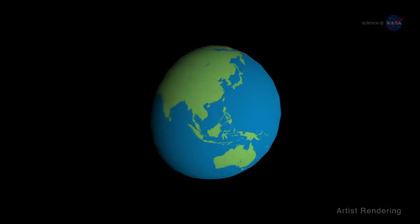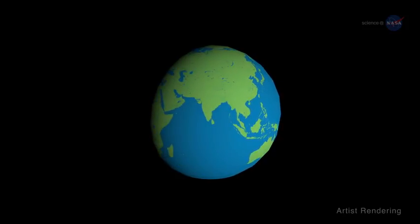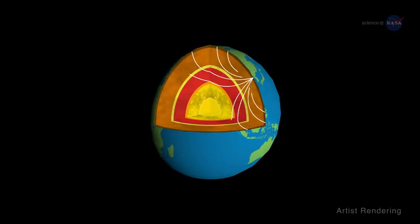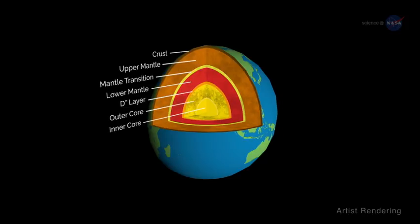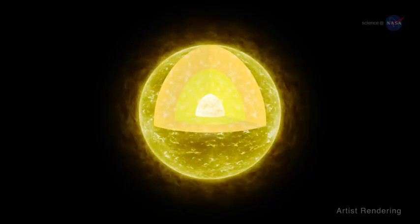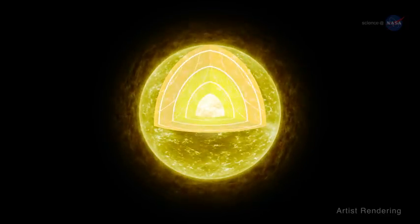Astro-seismology is akin to the science of seismology. Earthquakes send waves rippling through the body of Earth. By analyzing those waves, seismologists can figure out the interior structure of our planet. There are also waves rippling through the interior of stars—acoustic waves.